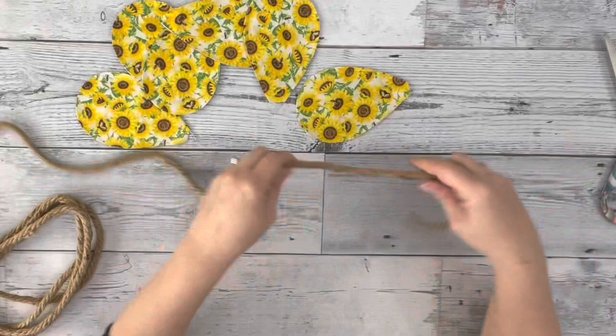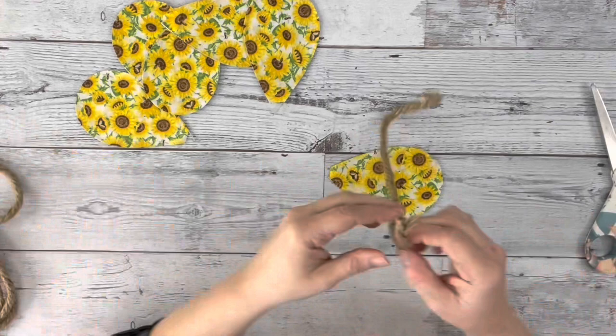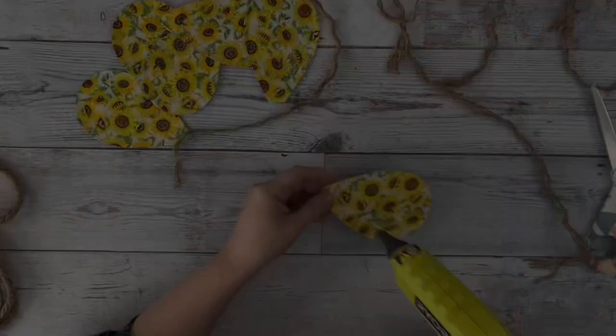And then I took nautical rope, which is also from Dollar Tree. I measured it around one of the petals to make sure it was long enough, and then I opened it up. There's four strands wrapped together, so I just used one strand for each petal.